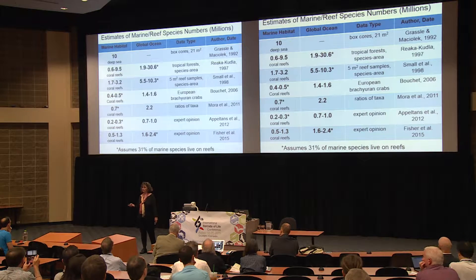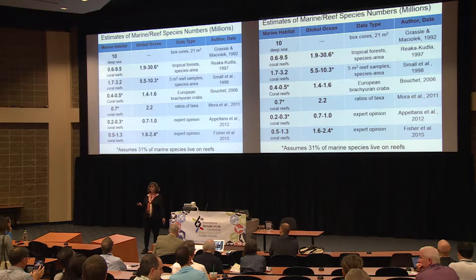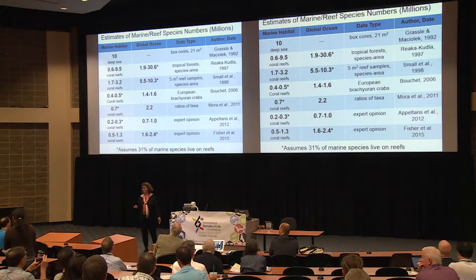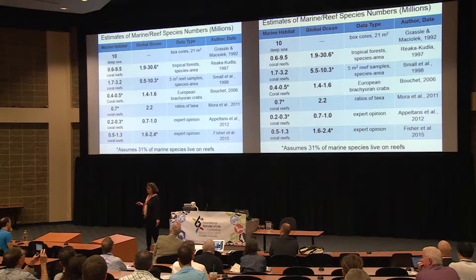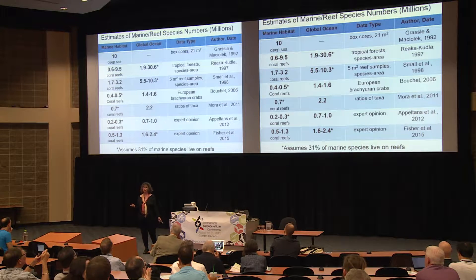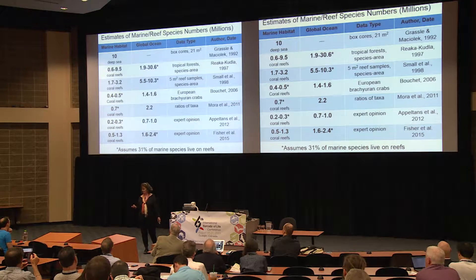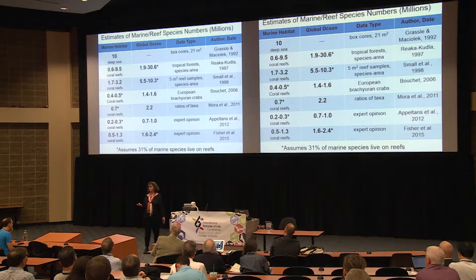There are a couple of things you can see from this graph. One is that in general the estimates have been going down, contrary to the assessment that we might have a hundred million species on the planet. We started off with a very famous deep sea estimate of about 10 million species, and perhaps as many as 10 million species on coral reefs. But over time those estimates have gone smaller and smaller, now running around about a million species for coral reefs, which would imply about 2 to 2.5 million species in the ocean at large.